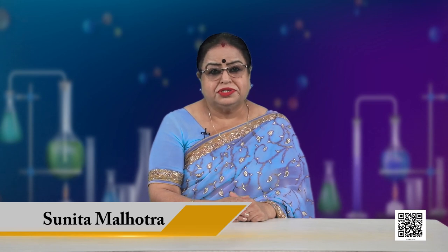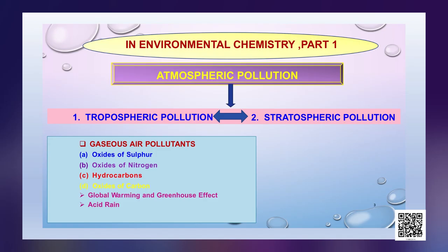Welcome learners to this session on environmental chemistry. In the previous session, we discussed about tropospheric pollution caused by gaseous air pollutants leading to global warming, a phenomena similar to greenhouse effect and acid rain.